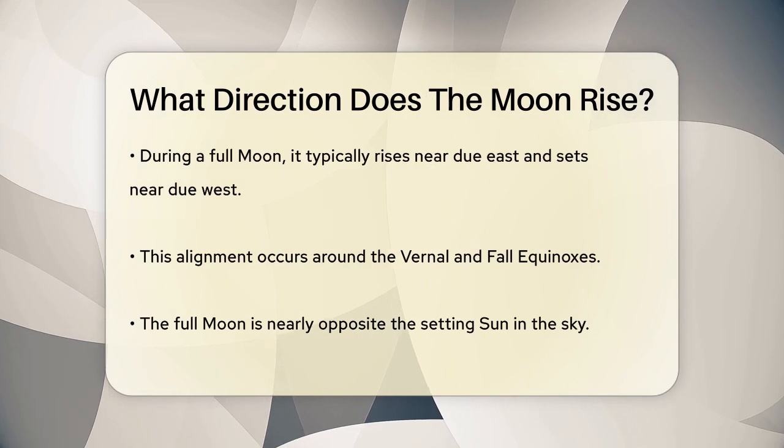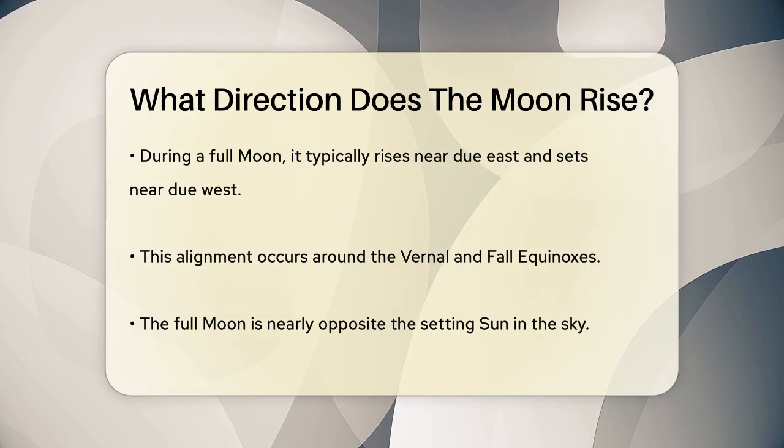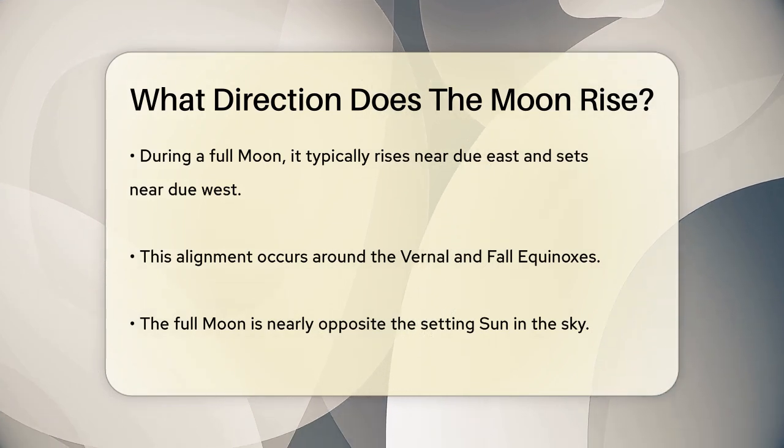This is because the full Moon is nearly opposite the setting Sun, so if you watch the sunset, turning around will usually show you the full Moon rising.